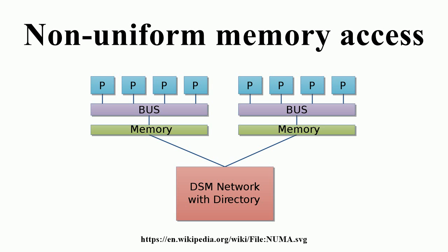This operation slows the processors attached to those banks, so the overall speed increase due to NUMA depends heavily on the nature of the running tasks. Intel announced NUMA compatibility for its x86 and Itanium servers in late 2007 with its Nehalem and Aquila CPUs. Both CPU families share a common chipset, and the interconnection is called Intel QuickPath Interconnect. AMD implemented NUMA with its Opteron processor, using HyperTransport.